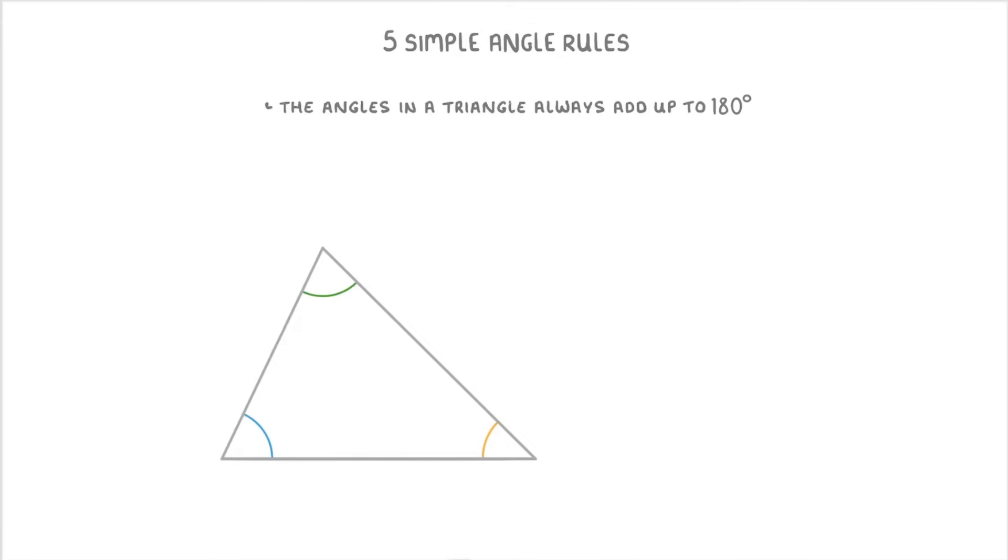The first of these rules is that the angles in a triangle always add up to 180 degrees. So if we label our angles a, b, and c, then we say that a plus b plus c equals 180 degrees.